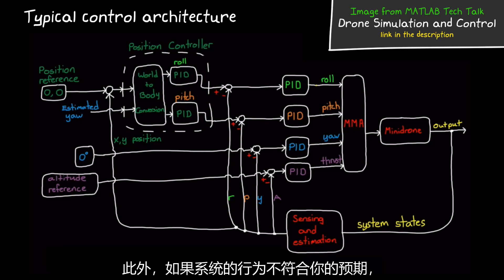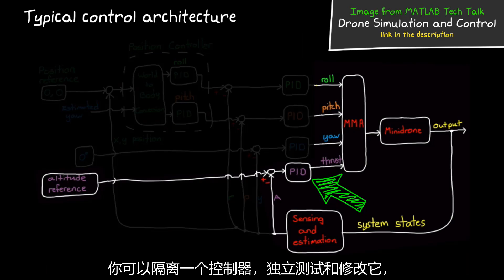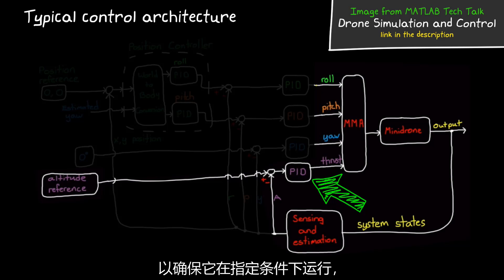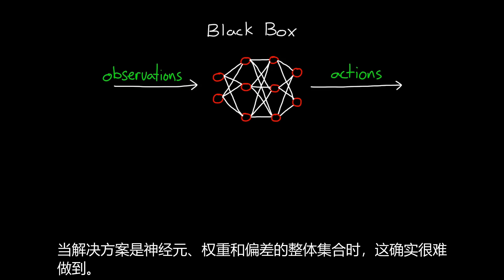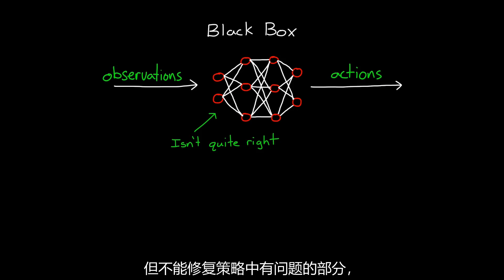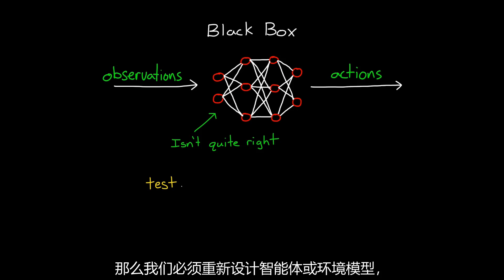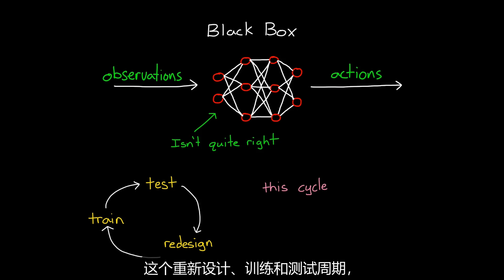With a traditional design, if the system doesn't behave the way you expect, you can often pinpoint the problem to a specific controller or loop and focus your analysis there. You have the ability to isolate a controller, test and modify it standalone to ensure it's performing under the specified conditions, and then bring it back into the larger system. This is really difficult to do when the solution is a monolithic collection of neurons, weights, and biases. So if we end up with a policy that isn't quite right, rather than being able to fix the offending part, we have to redesign the agent or the environment model and then train it again. This cycle of redesigning, training, and testing can be time consuming.